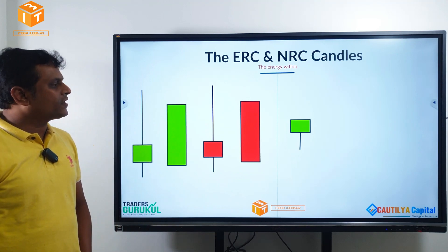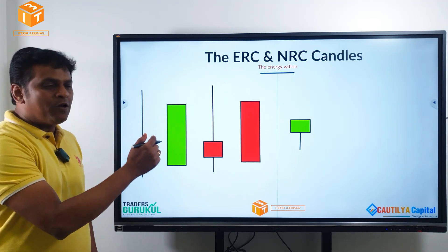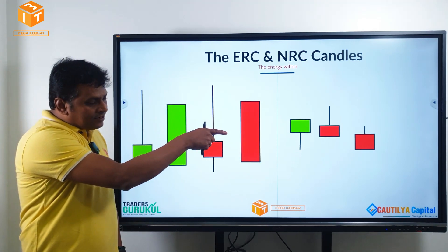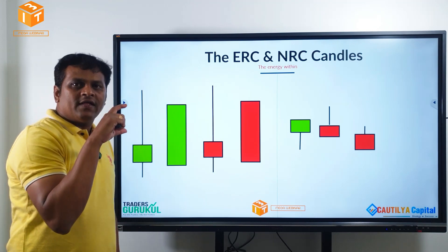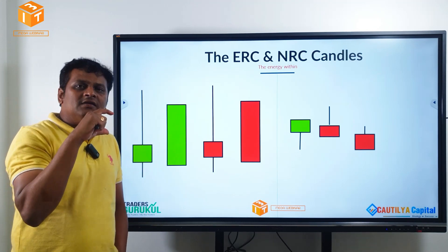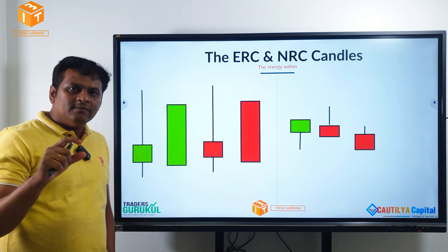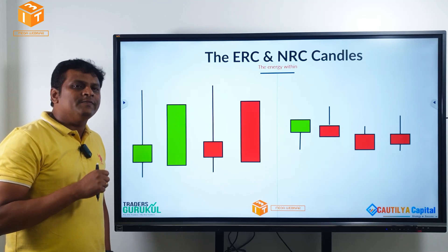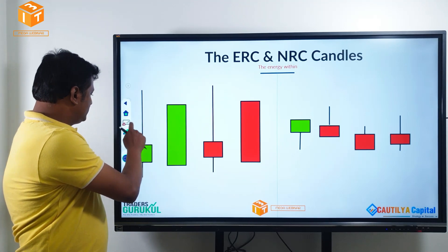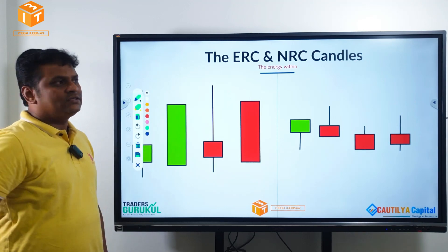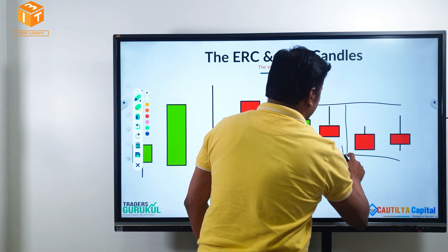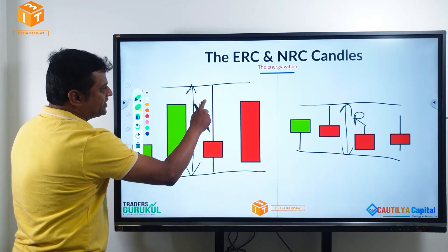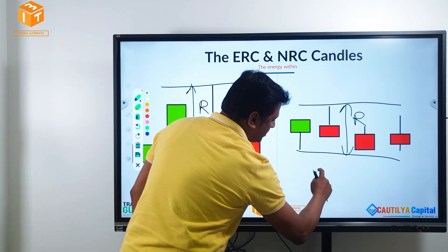Look at this. What kind of a candle is that? It's a base candle because the body is small. What about this? Another base candle. And the third one — the body looks big compared to the overall length. It is a momentum candle theoretically, but since the candle is so small, it is still considered as a base candle. And the last candle — another base. What is common in these? The range is very, very small compared to the range of those other candles. So this is an ERC and this is an NRC.